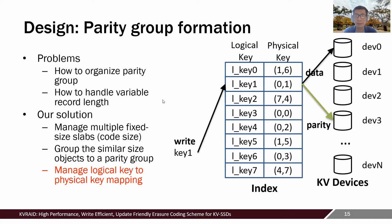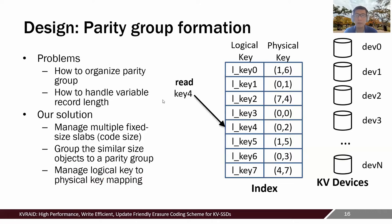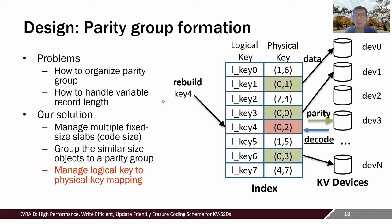We then write the data and parity codes into different key-value devices. Read requests first consult the logical key to physical key mapping, and use the physical key to retrieve data from the device. When rebuild happens, we can easily generate physical keys for the entire parity group from any logical key through the mapping table, and decode the lost data after retrieving the data and parities from individual devices.